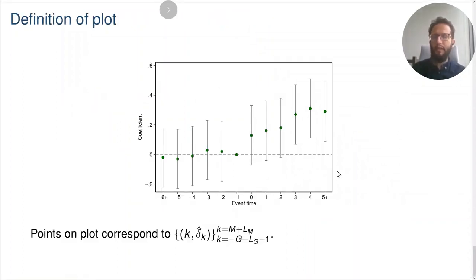With those components in hand, we can go back to our coefficient event time plane and just plot the components, and we're going to call the combination of event times and coefficients as the event study plot. Again, the vertical bars around the coefficients are confidence intervals.